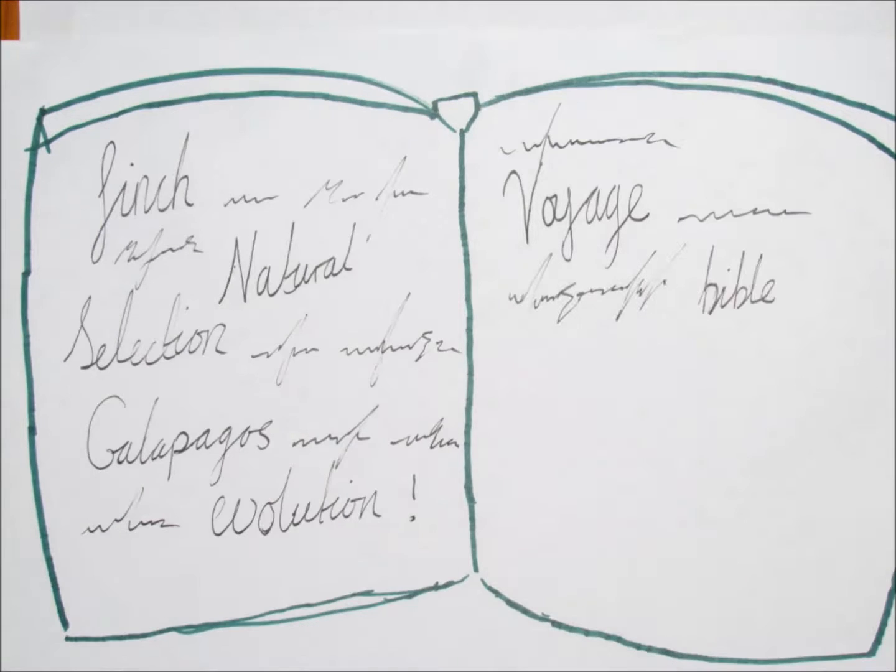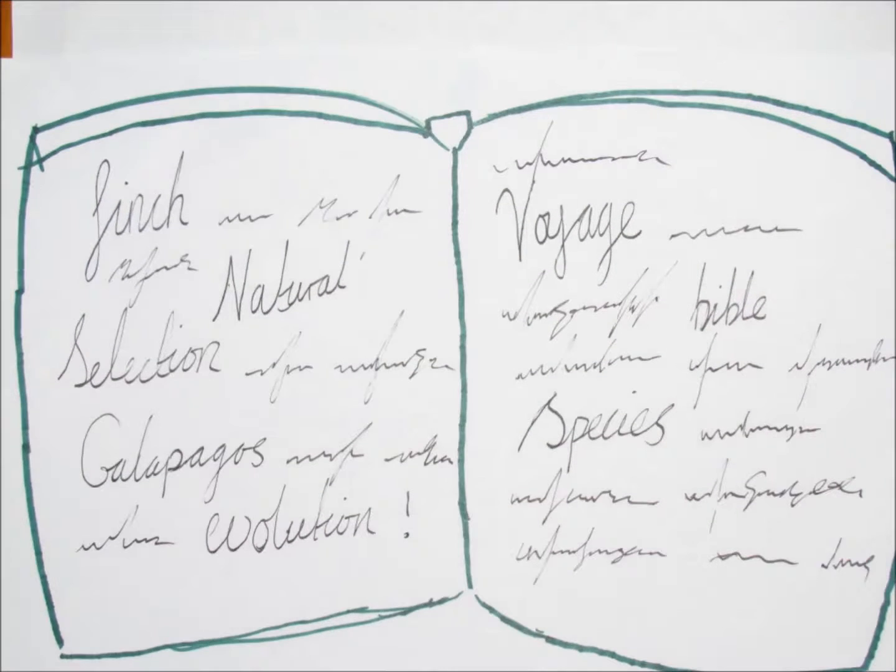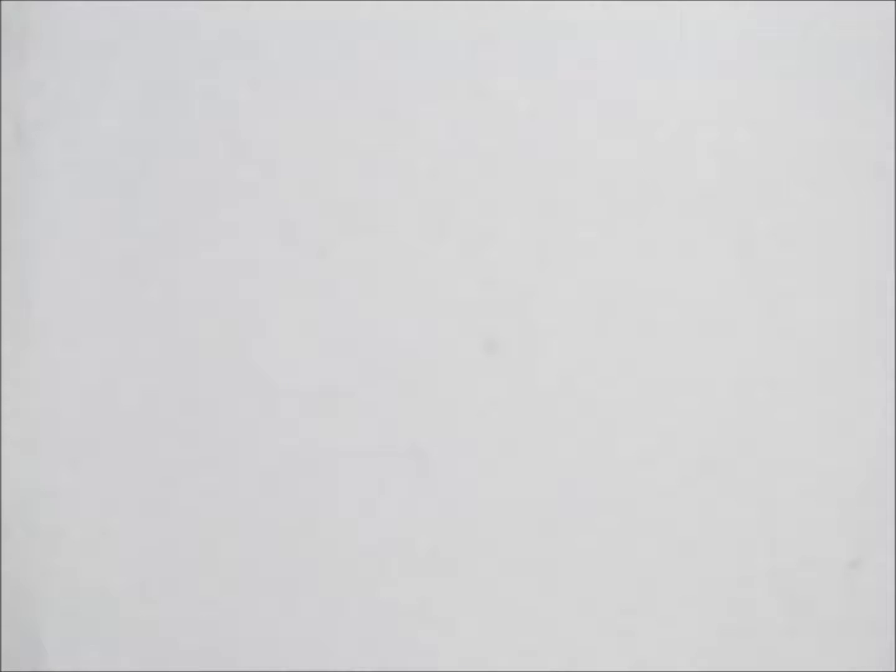Darwin worked on this theory for 20 years. He then learned that another naturalist, Alfred Russel Wallace, had developed similar ideas. In 1858, they made a joint announcement of their theory.